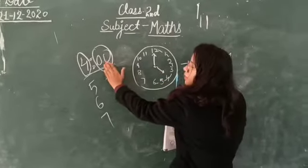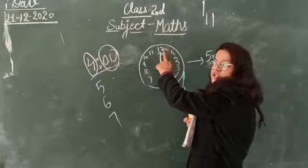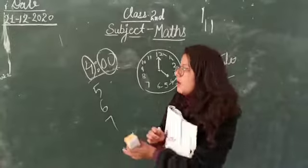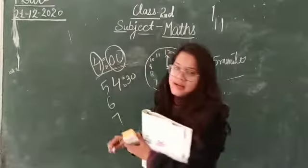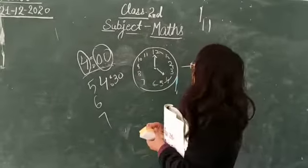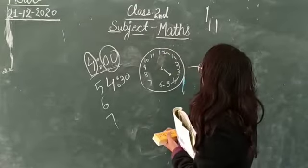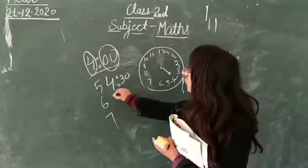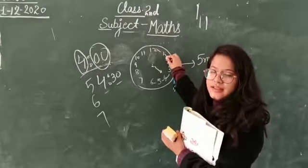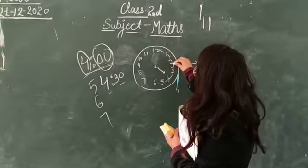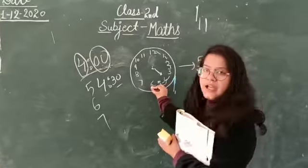Let's suppose it's 4:30. Now we will count from 12: 5, 10, 15, 20, 25, and 30. So the minute hand pointing to 6 means 30 minutes, which gives us 4:30.